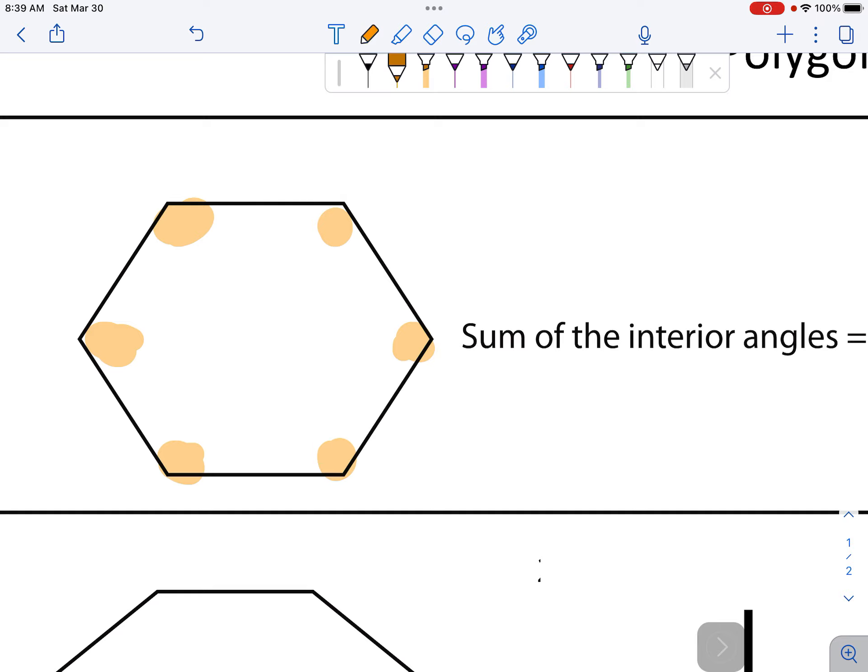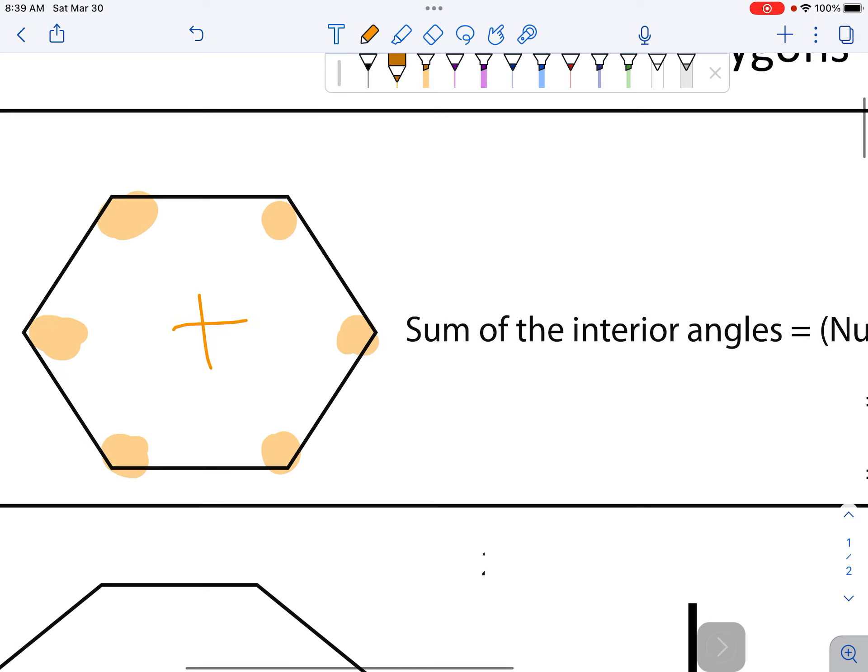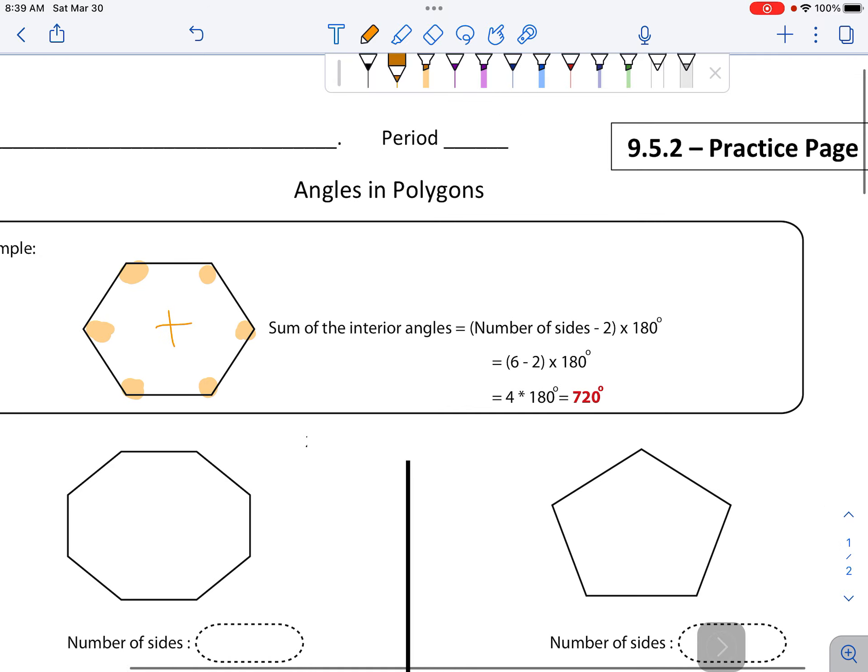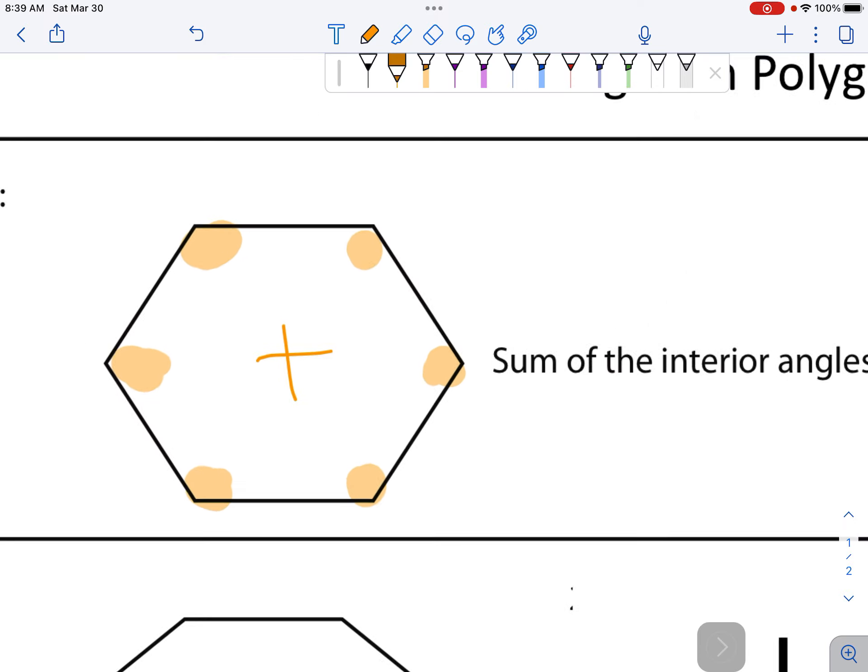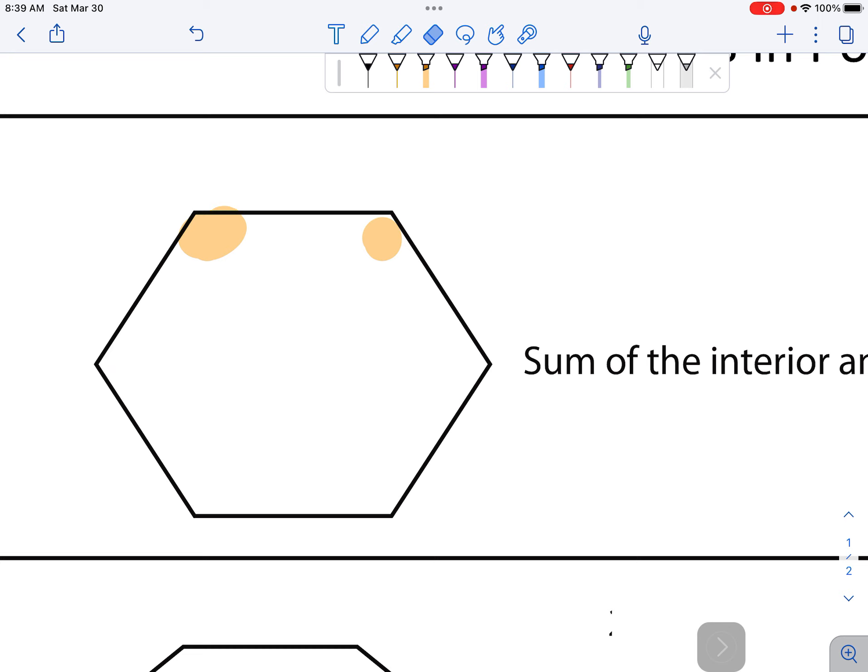If you add up all of these interior angles, you can figure out what that number would be by taking the number of sides and subtracting 2. The reason we do that is because if you pick one vertex - you can't just do it wherever you want to - if you pick one vertex, like this point right here, and you make straight lines to the other vertices to make triangles, you end up making 2 less triangles than sides. 1, 2, 3, 4 triangles.